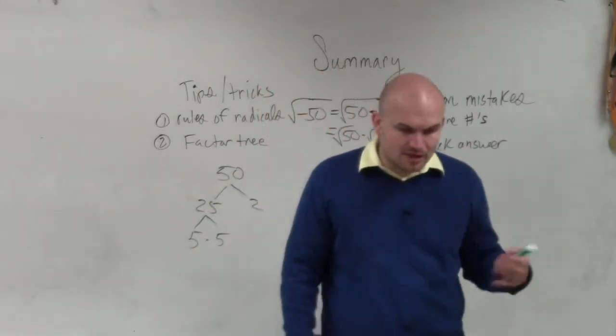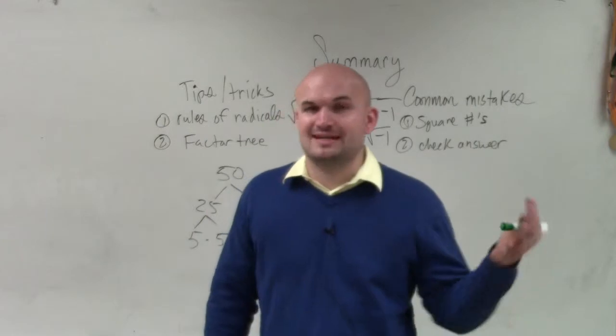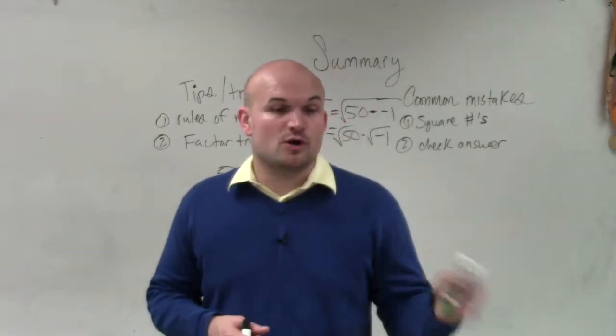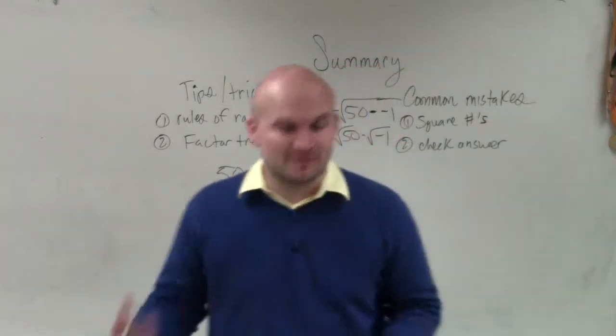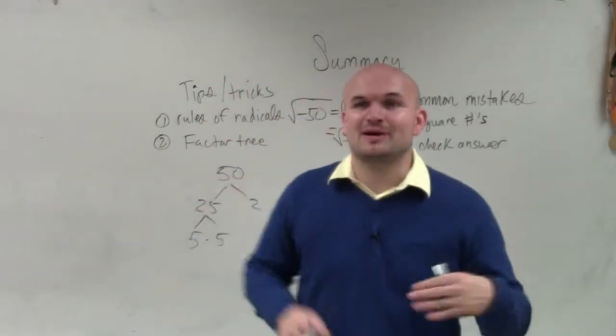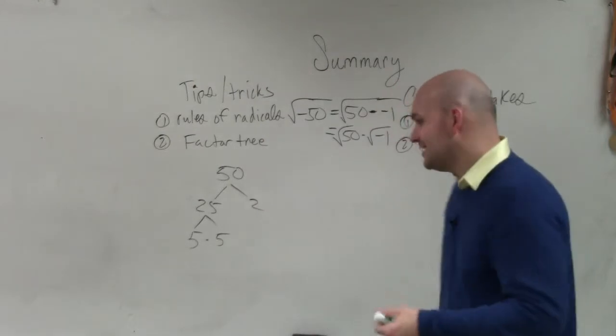The square root, numbers that you can take the square root of and obtain an integer. So square numbers, 1, 4, 9, 16, 25, 36, 49, 64, 81, 100, 121, 144. I could just keep on going up, 169, 196, 225.